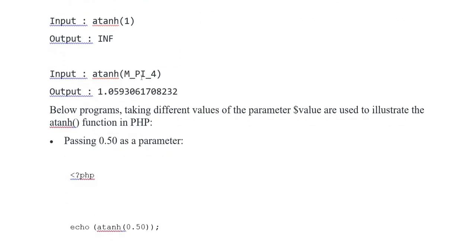Again input atanh(M_PI_4), output is 1.05 something. Taking two different values of the parameter variable value, we will demonstrate the atanh function in PHP.